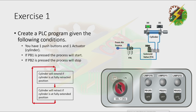Create a PLC program given the following conditions. You have two push buttons and one actuator. If PB1 is pressed, the process will start. If PB2 is pressed, the process will stop.